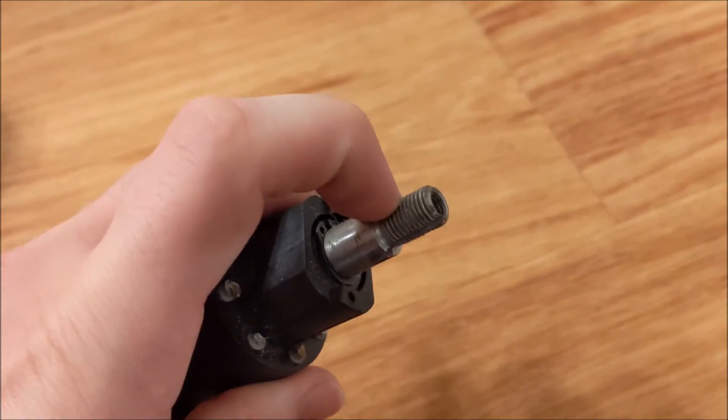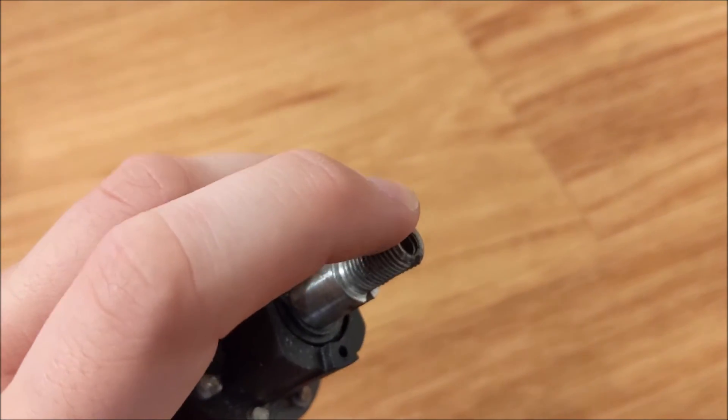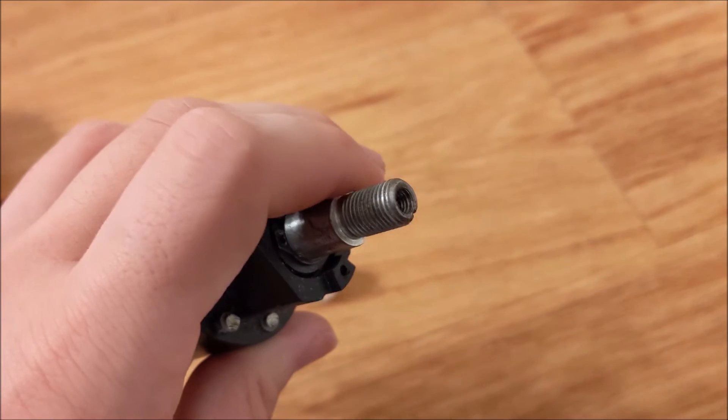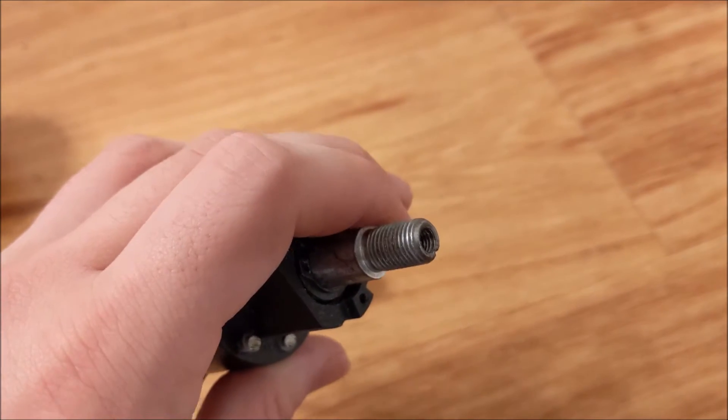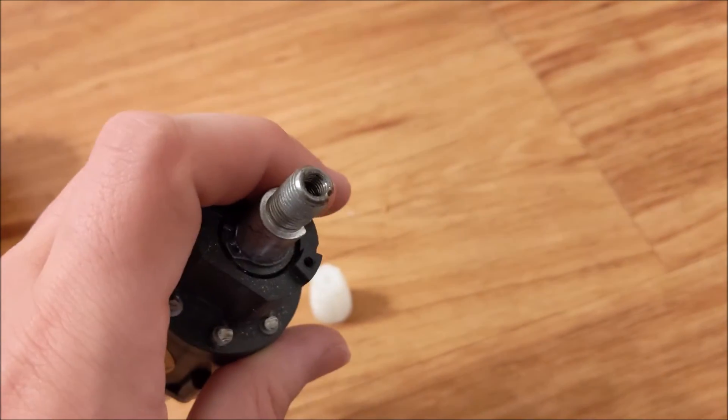On the end of these drill chucks, there is an M10 right-hand thread for the outside portion and then an M5 left-hand thread in the center. And that's to make it so that when the drill is in operation, the chuck will never actually loosen itself, whether you're drilling clockwise or counter-clockwise.